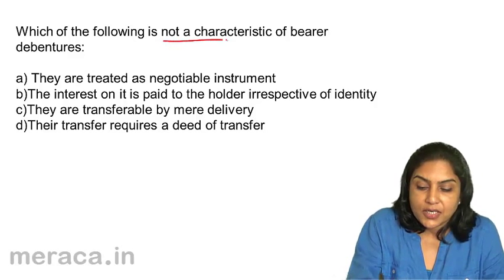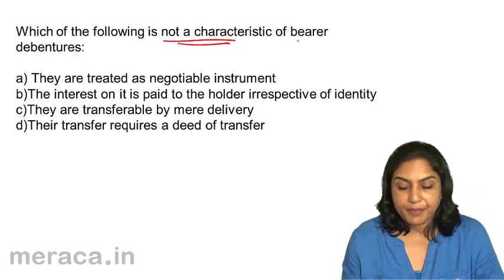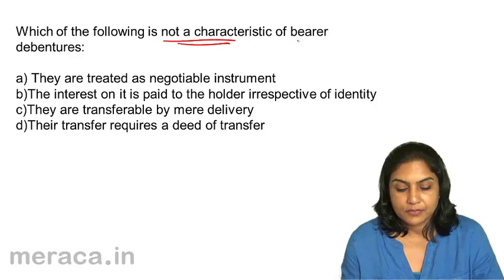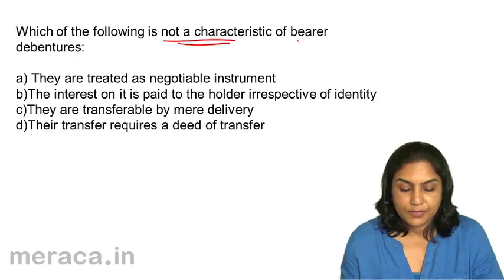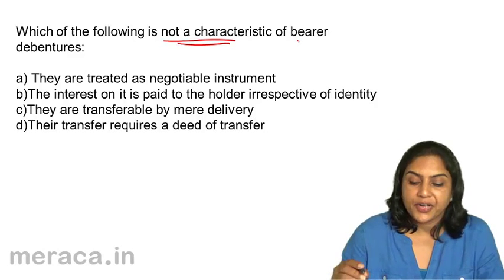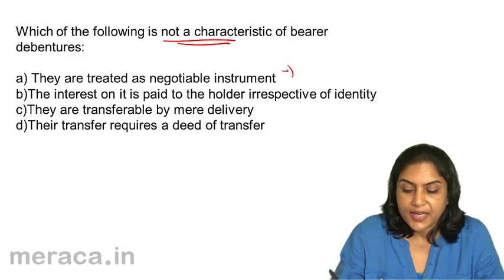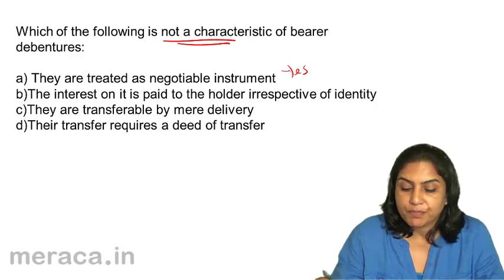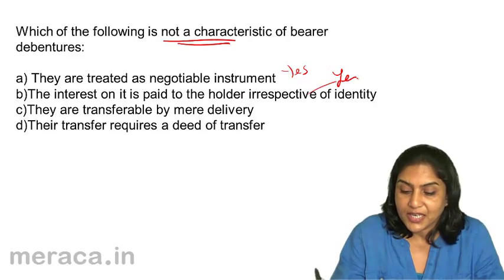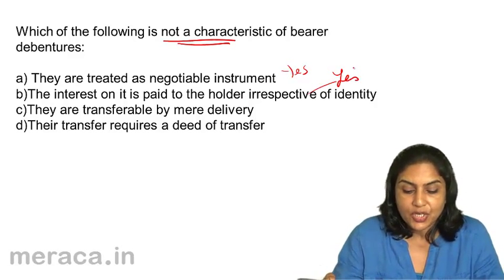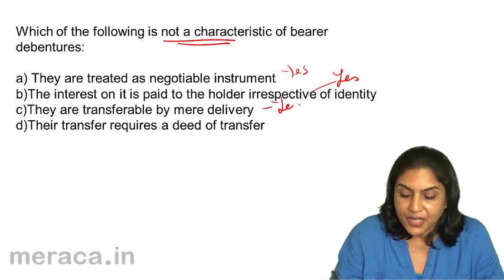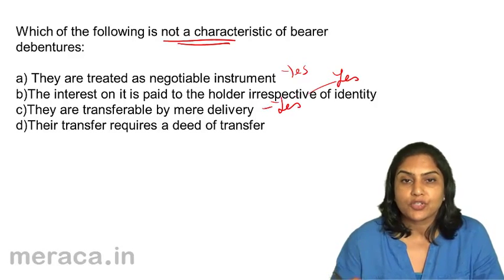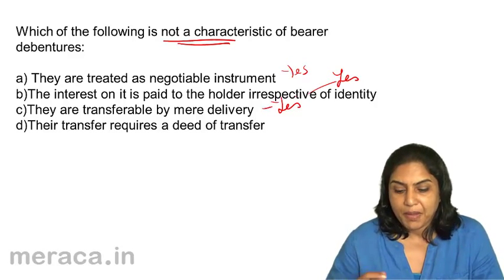Their transfer requires a deed of transfer is not a characteristic of a bearer debenture. A. They are treated as a negotiable instrument — yes, that is a characteristic because they can be easily transferred. B. The interest is paid to the holder irrespective of identity — yes, because they are a bearer debenture. C. They are transferable by mere delivery — yes, the very name bearer debenture means whoever holds the debentures will get the repayment of the interest.